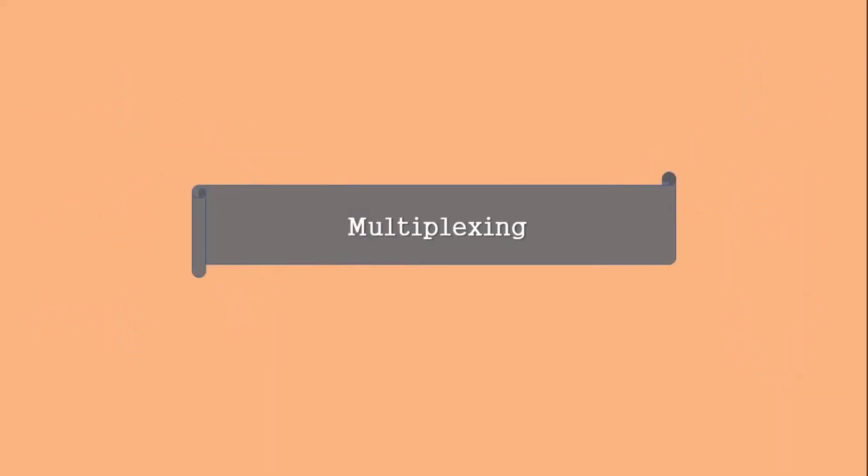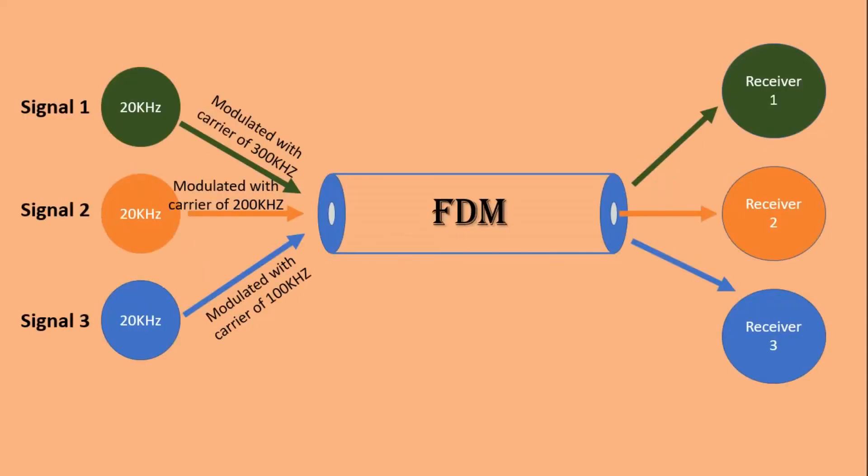Multiplexing of different signals is also possible in modulation. And this is the example of frequency division multiplexing. So these are some of the important aspects why modulation is required in communication.